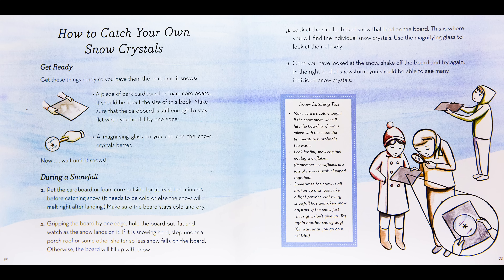Snow catching tips: Make sure it's cold enough — if the snow melts when it hits the board, or if rain is mixed with the snow, the temperature is probably too warm. Look for tiny snow crystals, not big snowflakes. Remember, snowflakes are lots of snow crystals clumped together. Sometimes the snow is all broken up and looks like a light powder — not every snowfall has unbroken snow crystals. If the snow just isn't right, don't give up; try again on another snowy day.